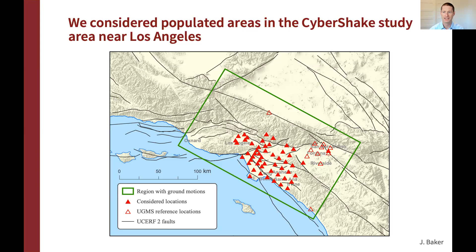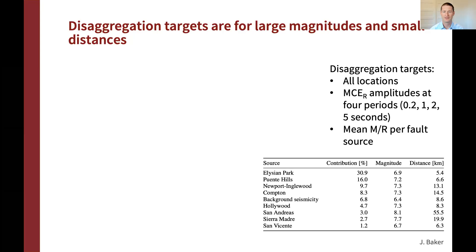For the study area, we looked at the populated areas near Los Angeles. The rectangle on the map shows the CyberShake study area, and the red triangles show 53 locations we studied — the most populated regions where engineering projects would be anticipated. For each location and a number of site conditions — ultimately two VS30 values representing a softer and a stiffer site — we looked at disaggregations from hazard analysis at MCER amplitude, a design level at which response history analysis would be performed. Target amplitudes were provided by USGS co-authors, covering short to long periods.